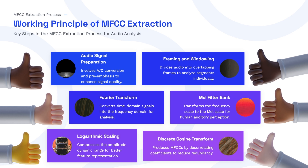After the Mel filter bank, the audio sample is given to the logarithmic scaling step, which compresses the amplitude dynamic range for better feature representation. Once logarithmic scaling is done, it goes to the discrete cosine transform. The DCT phase produces MFCC coefficients by decorrelating the coefficients to reduce redundancy. This is how MFCC feature extraction works.